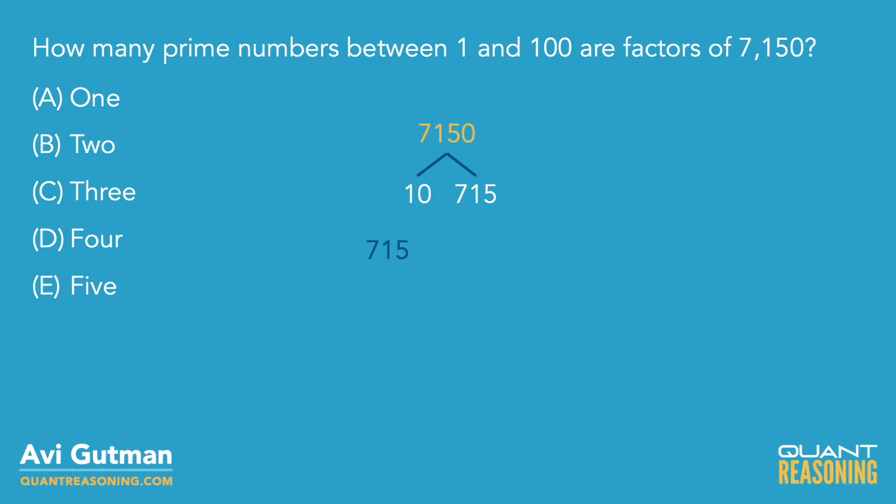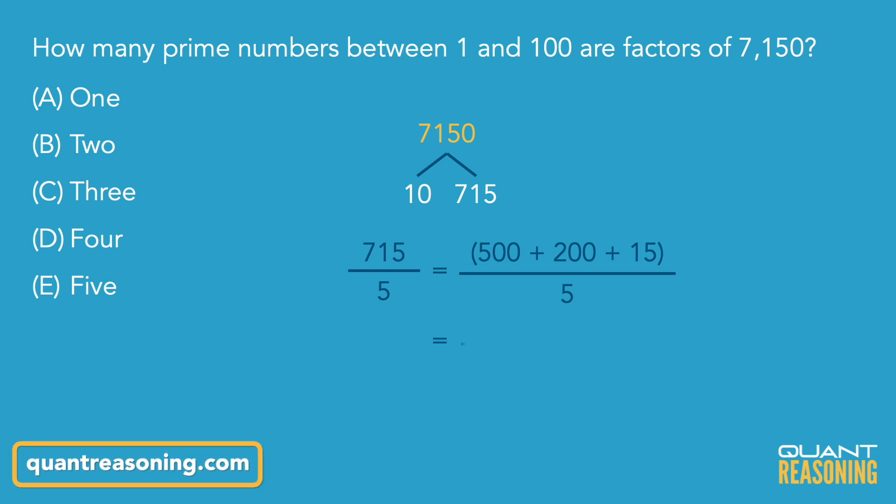715 has an obvious factor of 5, so how many 5s are there in 715? Well, in 500 there are 100 5s, in 200 there are 40 5s, and in 15 there are 3 5s. So 143 times 5.